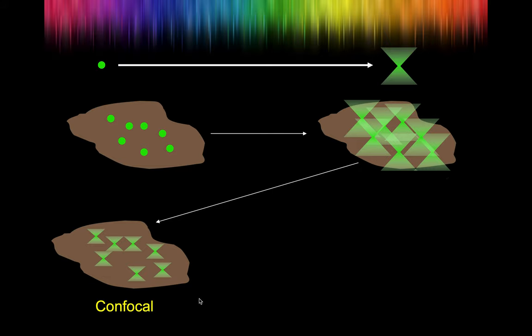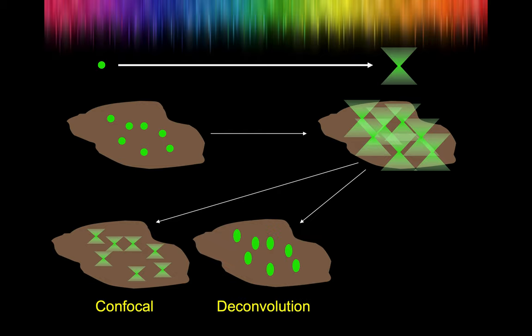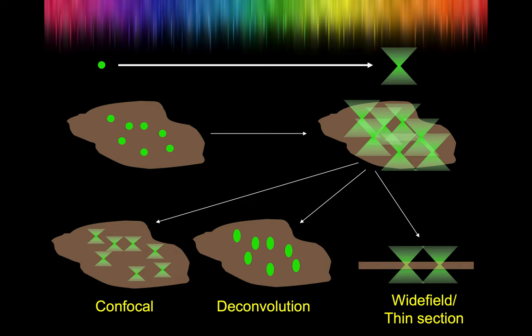One classic option is using a confocal microscope — confocals are great for three-dimensional structures because we reject the out-of-focus light. Another strategy is deconvolution microscopy, where we collect light from wherever it ended up within the system and reassign it back to its original position, increasing contrast. A third strategy is thin section or wide field — rather than working with the full volume of tissue, we can section it in the histology facility, or work with thin tissue culture cells that are already very flat, so there's very little out-of-focus light because the light only comes from the focal plane.